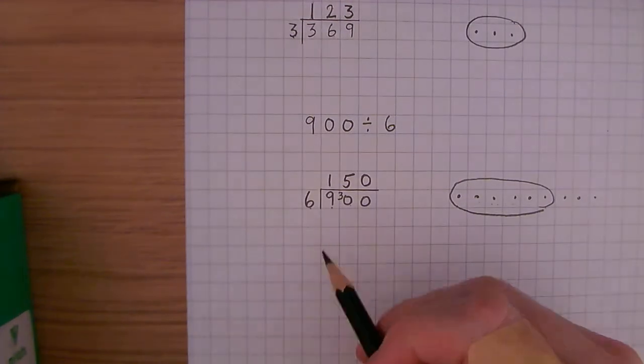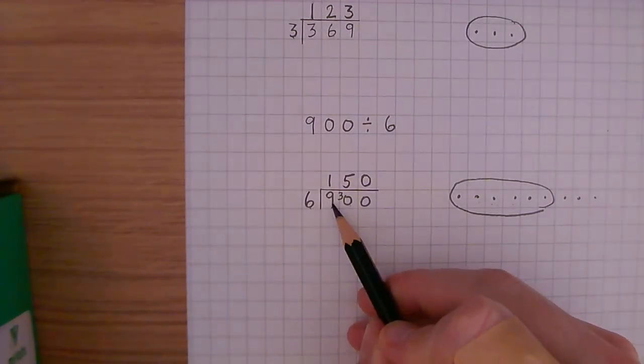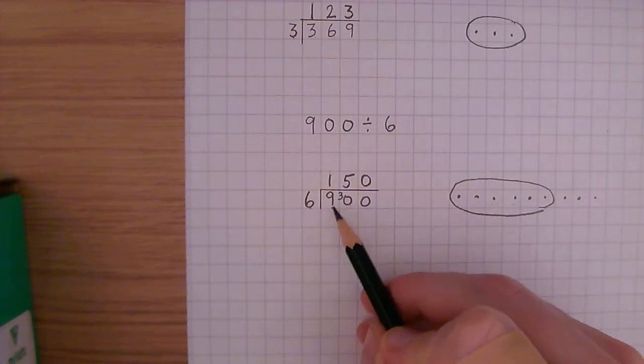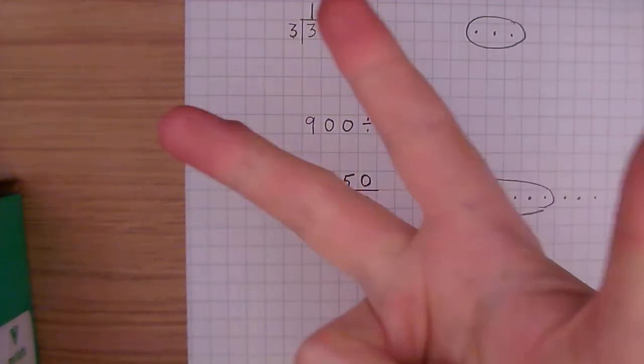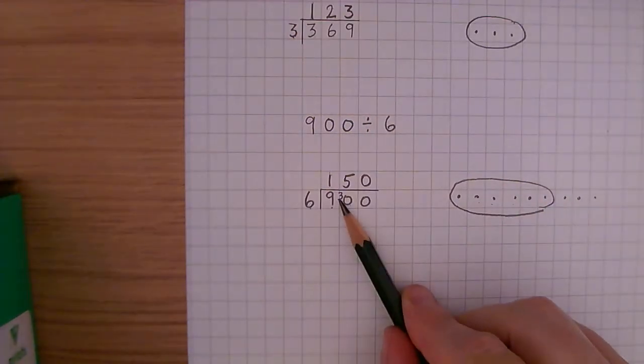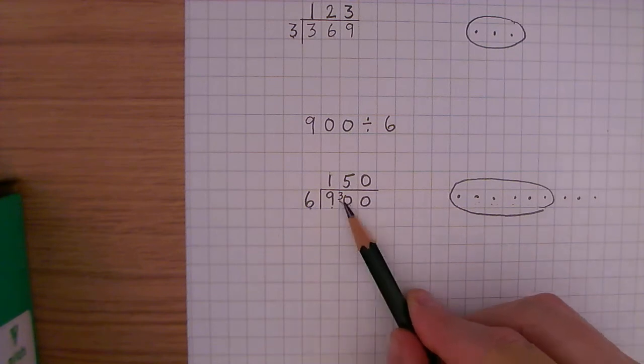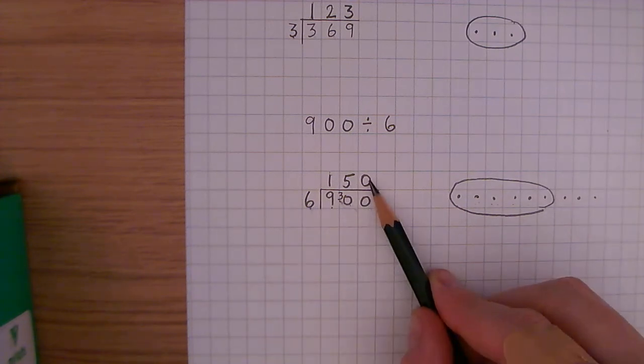Quick check. How many 6's go into 9 is 1. 1 times 6 is 6. Remainder is 3, because the remainder is 7, 8, 9. That's 3 left over. 3 goes there. How many 6's go into 30 is 5. No remainder. How many 6's go into 0 is 0.